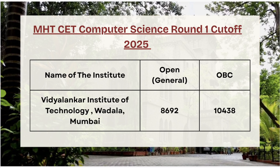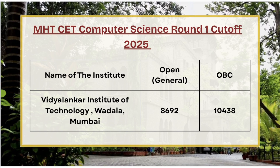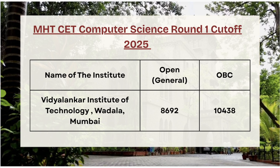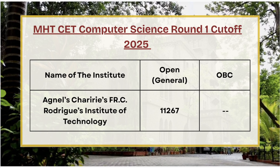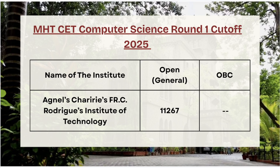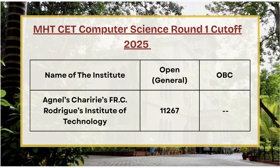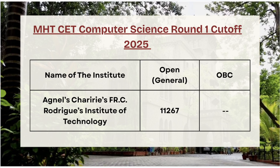Next we have Vidyarankar Institute of Technology. For open category the cutoff rank is 8692, and for OBC category the cutoff rank is 10,438. Next we have ACFR Institute of Technology — for open category the cutoff rank is 11,267.